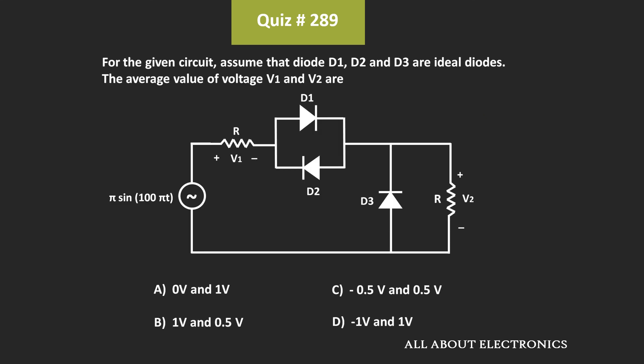But if you are already aware, then using this quick method, you can easily find the average value. That means for the given question, the average value of V1 is –0.5 V and V2 is 0.5 V, so C is the correct answer.